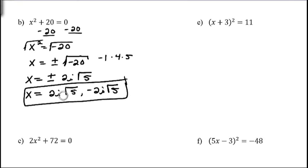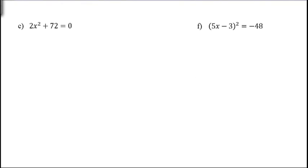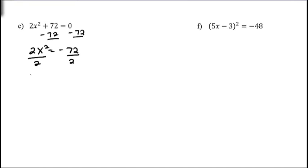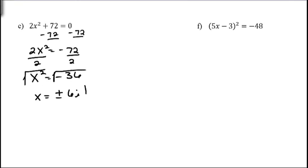Remember that writing plus or minus means you have two solutions. In our next example, we have 2x² + 72 = 0. We need to get x² by itself first, then take the square root on both sides. Subtract 72 from both sides to get 2x² = -72, then divide both sides by 2 to get x² = -36. Taking the square root on both sides gives x = ±6i. It's really important to remember to do the plus or minus when taking the square root on both sides.